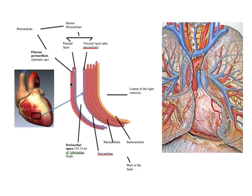Besides the protective tough layer, there also needs to be a lubricating fluid area to allow some movement for the heart — to give it room to move and maneuver without creating friction on the fibrous layer. Because if the heart was rubbing directly against the pericardial sac, that friction would cause all sorts of problems.